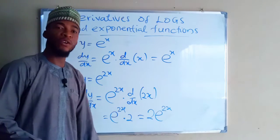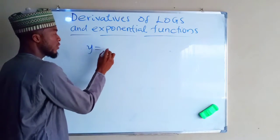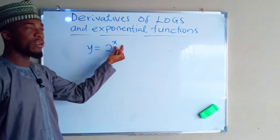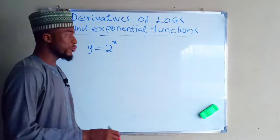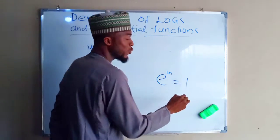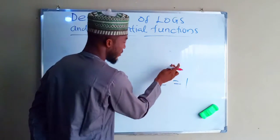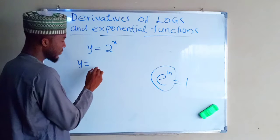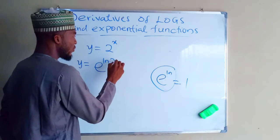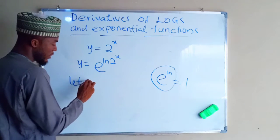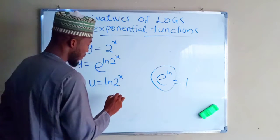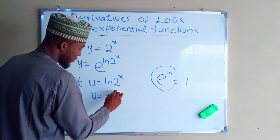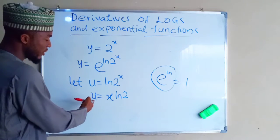Sometimes the base might not be e. If y equals 2^x, the base is a number while the power is a function. We can introduce e^(ln), which equals 1, so multiplying the right-hand side by e^(ln) does not change the function. So y becomes e^(ln(2^x)). Let u equal ln(2^x); by the law of logarithms, u equals x·ln2.